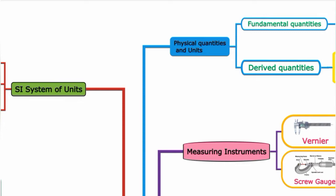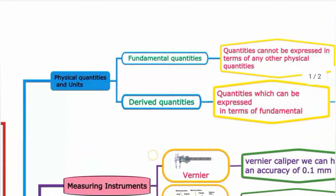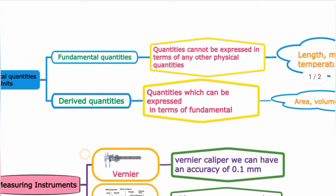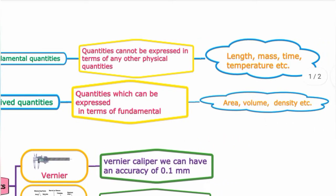Fundamental quantities are quantities that cannot be expressed in terms of any other physical quantities. They are the most basic quantities. Examples of fundamental quantities include length, mass, time, temperature, etc.